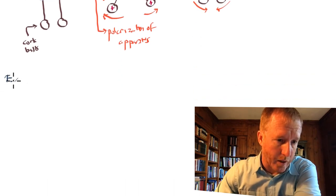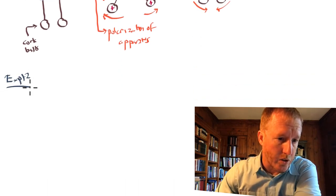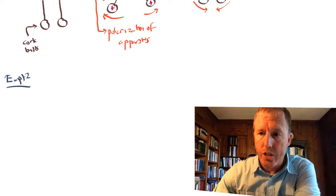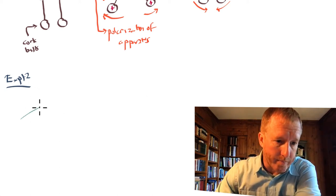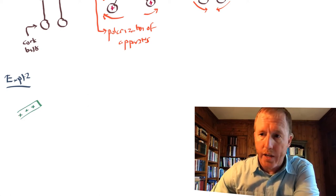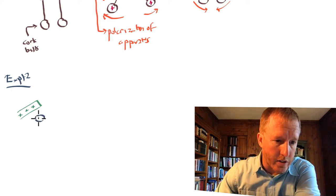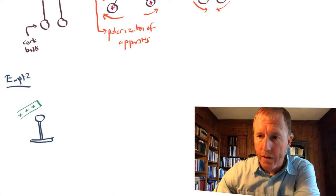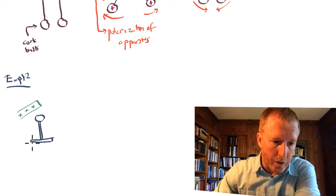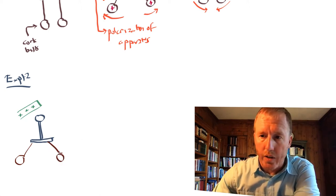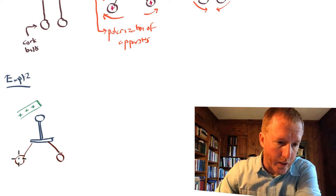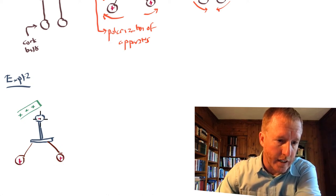What about his next experiment? We'll call this experiment two. It's very similar in that you have a glass rod that is positively charged, and you bring this glass rod nearby this same apparatus. When you do so, these balls swing apart from one another. These positive charges repel these positive charges, leaving negative charge on the near end.